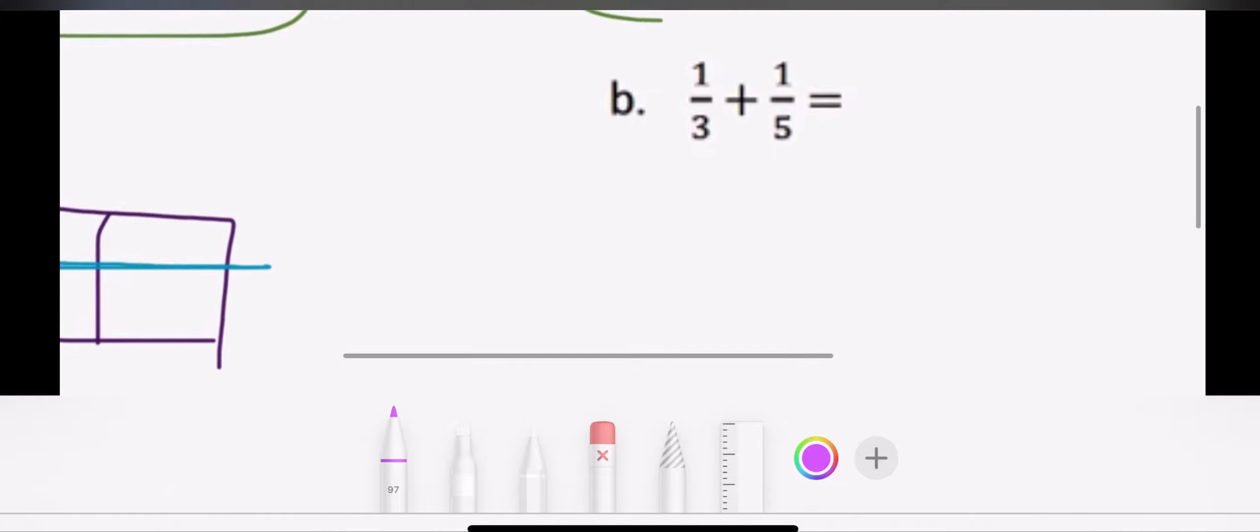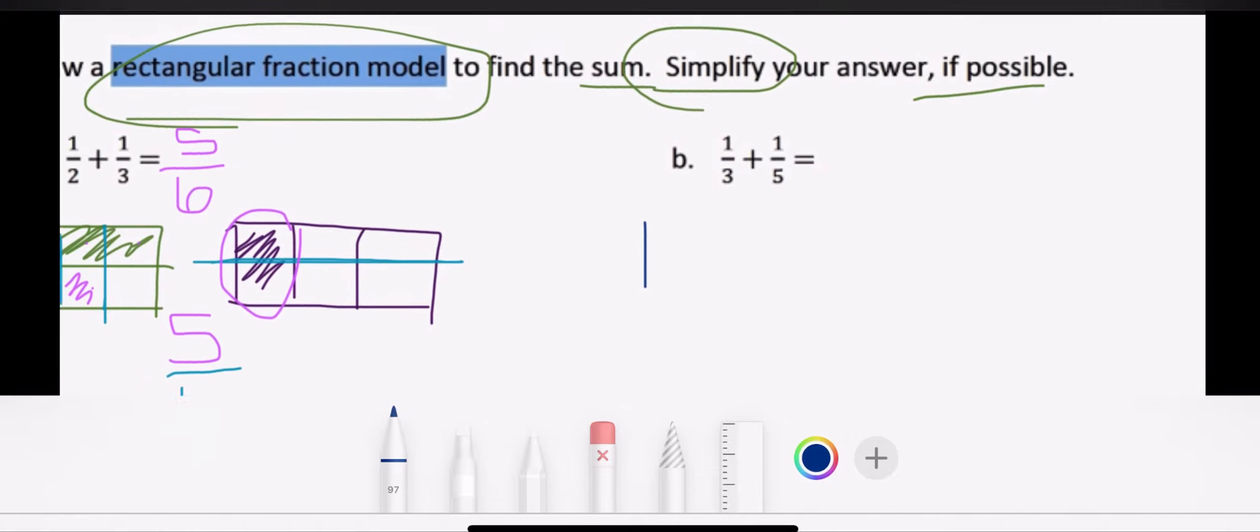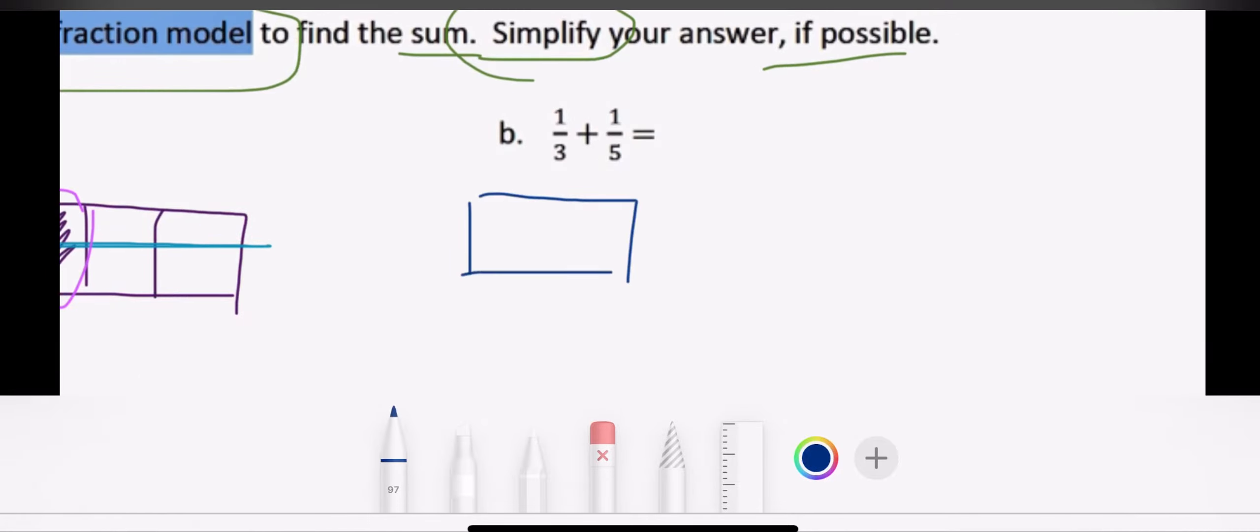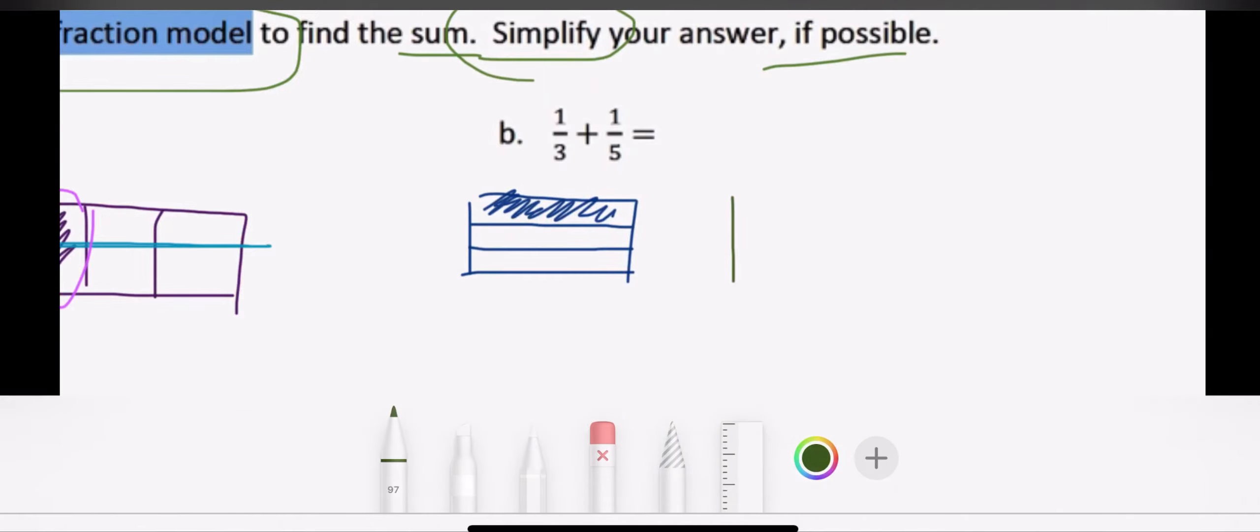So let's do one more together. For this one, I see that I have to add one third plus one fifth. So right away I'm thinking, okay, I'm going to have a much larger denominator here. So I know to start off I'm going to use that rectangular fraction model and I'm going to have my first rectangle and I know that I have one third or one out of three. And then for my second number, that one is one fifth. So here I'm going to draw out my rectangle again. And I'm going to split this one as evenly as I can into fifths.